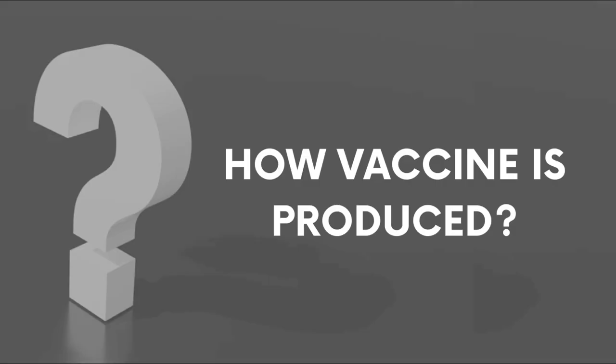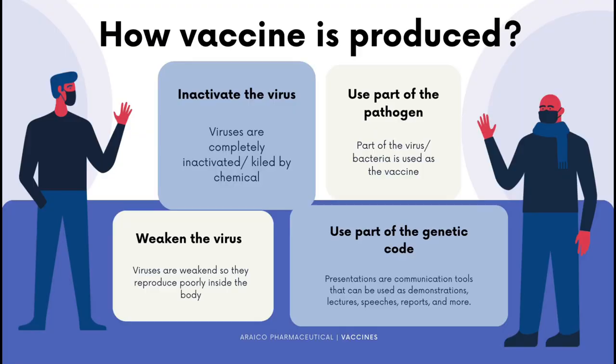How is a vaccine produced? Vaccines are produced by inactivating the virus, by using part of the pathogen, by weakening the virus, and also by using part of the genetic code.